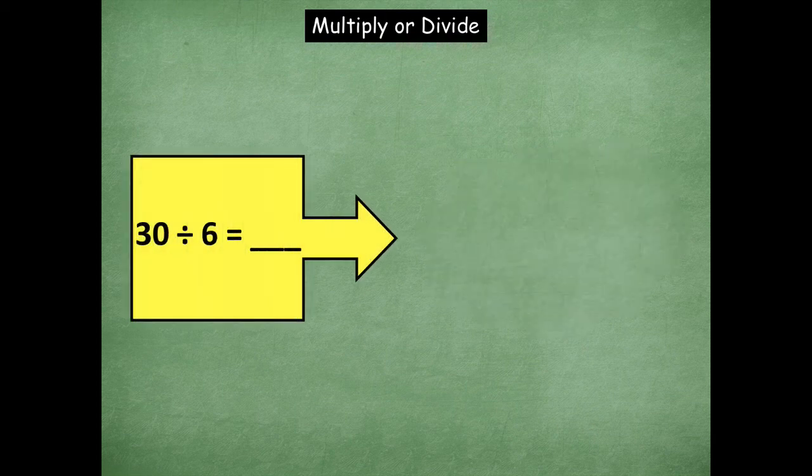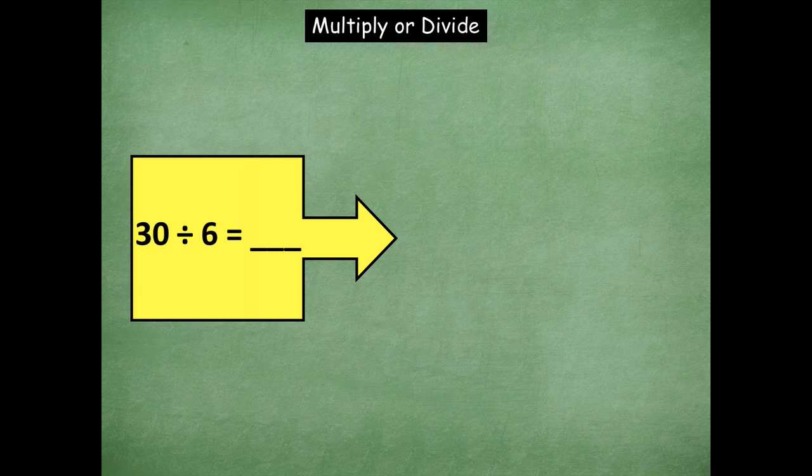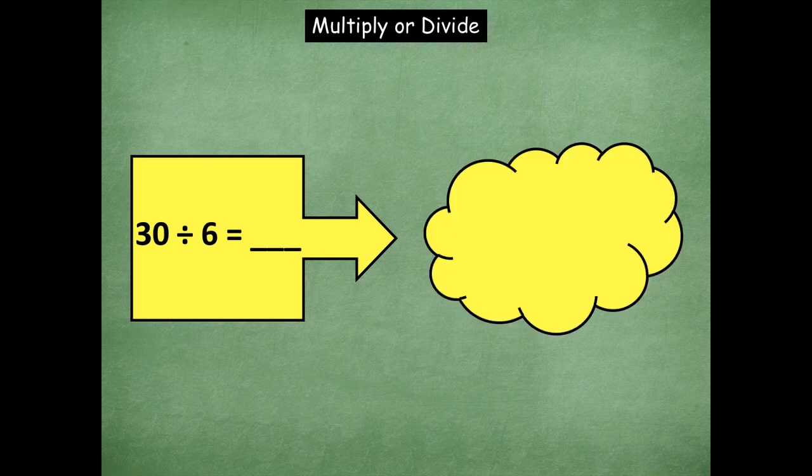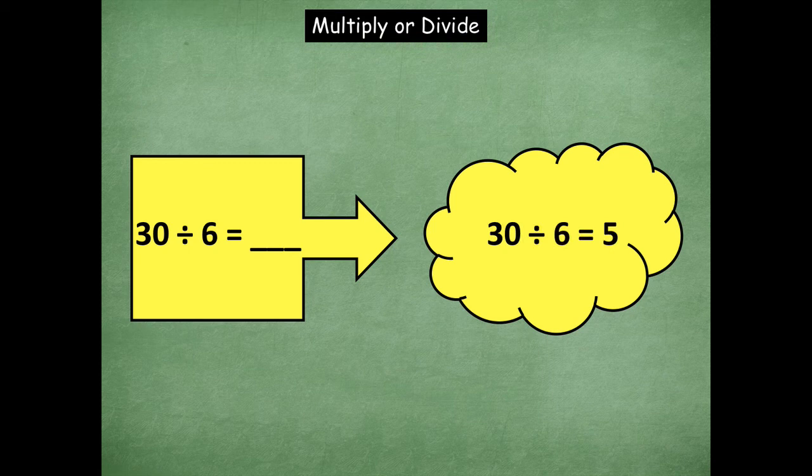So 30 divided by 6. A little bit trickier now. 30 divided by 6. 30 divided by 6 is 5.